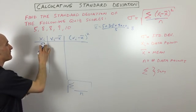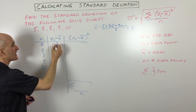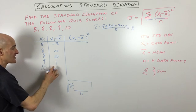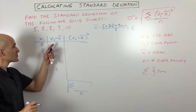So what we're going to do is we're going to take 5 minus 8, which is negative 3, 8 minus 8, which is 0, 8 minus 8, which is 0, 9 minus 8, which is 1, and 10 minus 8, which is 2. So those are the deviations.